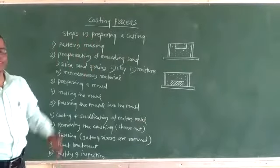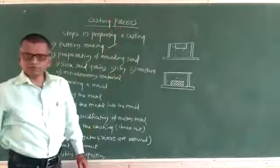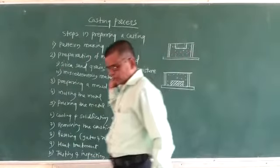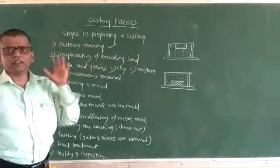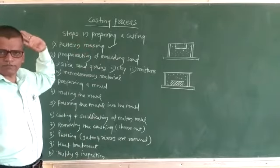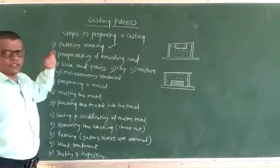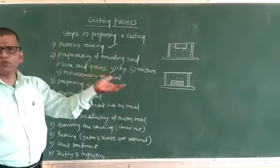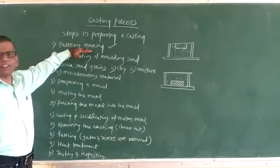Now regarding the steps in preparing a casting. The first step is pattern making. A pattern is a tool required in the casting process — it is used to create a cavity in a molding sand. It is a model constructed so that it will create a cavity in the molding sand. Many materials can be used for manufacturing the pattern: you can use wood, metal, plastic, or wax. That is the first step — pattern making.